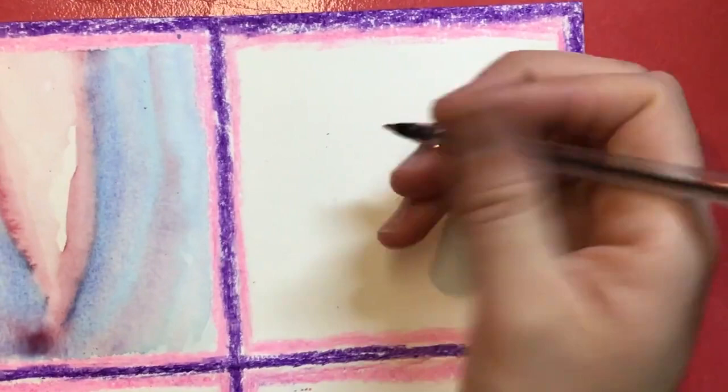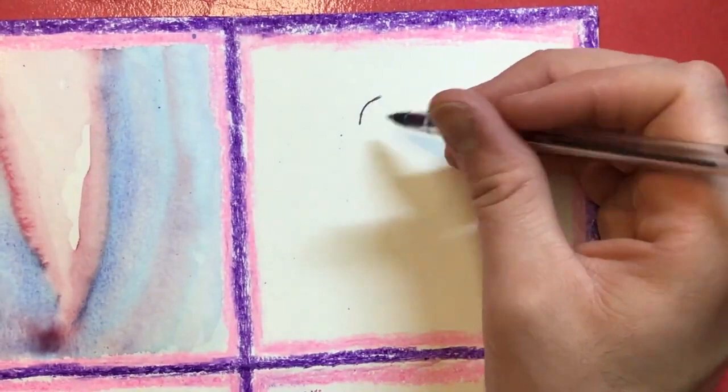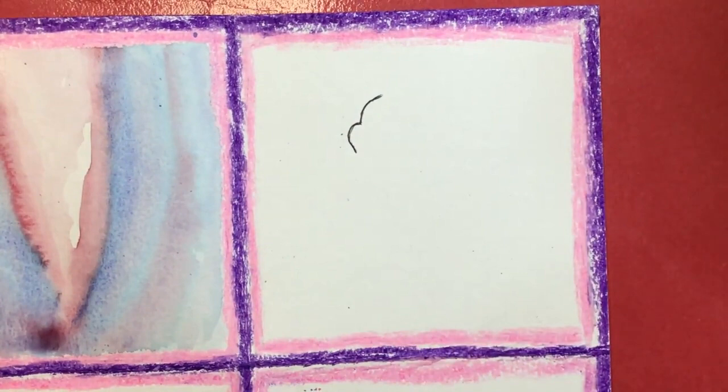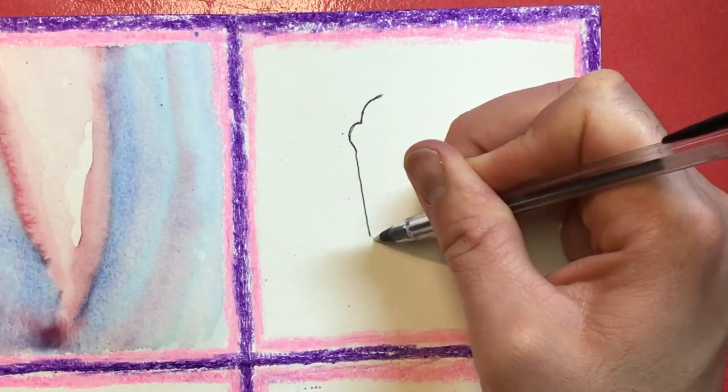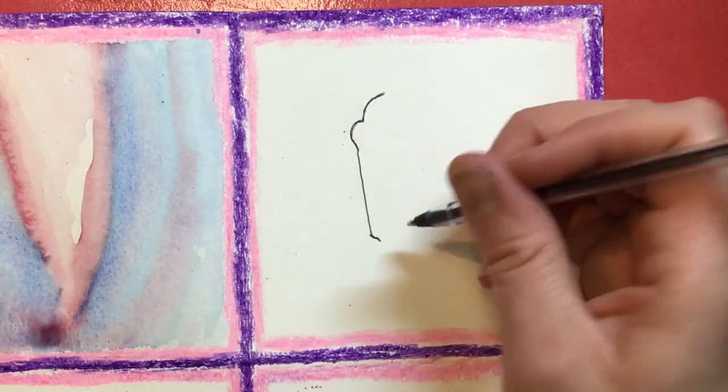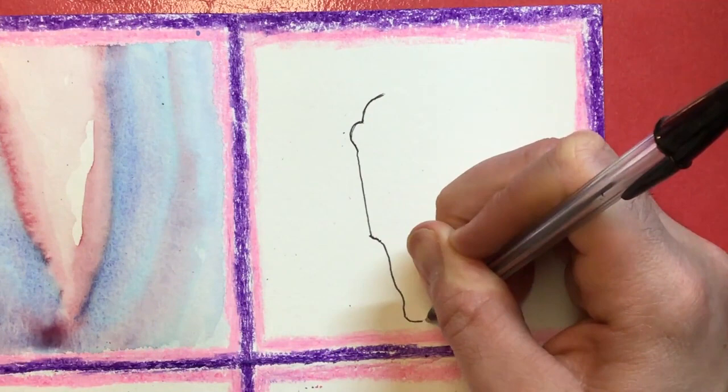So we're going to start up here. And then we're going to come out a little bit for the eye area like this. And we're going to come down. And we're going to come in a little bit. Like that. And then we're going to come down again like this.